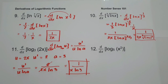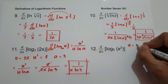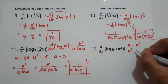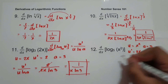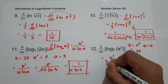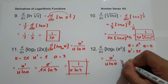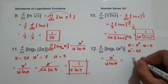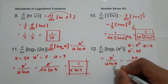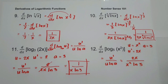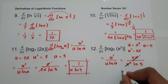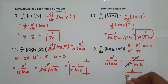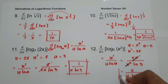Number twelve: derivative of log base 5 of x². Let u = x², u' = 2x, and a = 5. Applying the formula u' over (u · ln a) gives 2x over (x² · ln 5). Cancelling x with x² gives 2 over (x · ln 5). This will be our answer.